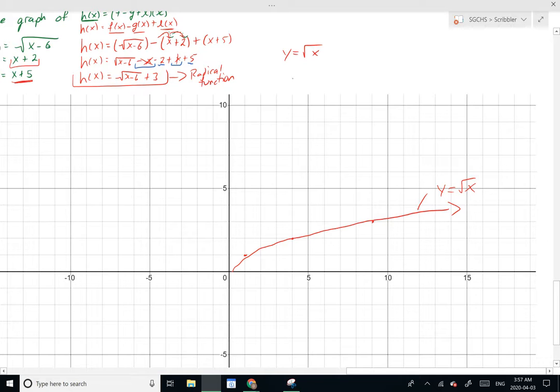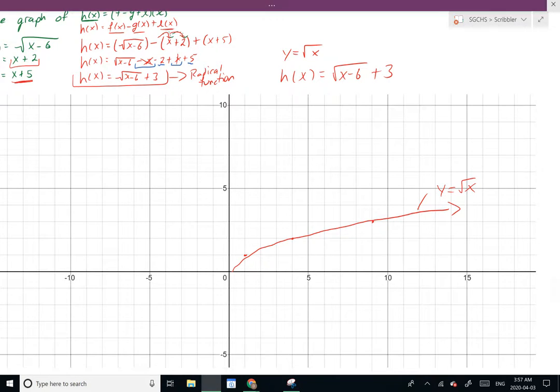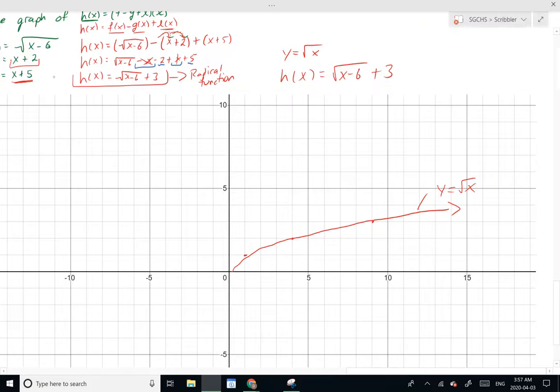Now, h(x) equaling the √(x-6) plus 3, well, these are just transformations applying to our base function √x. We are shifting 6 units right, and then shifting 3 units upwards.